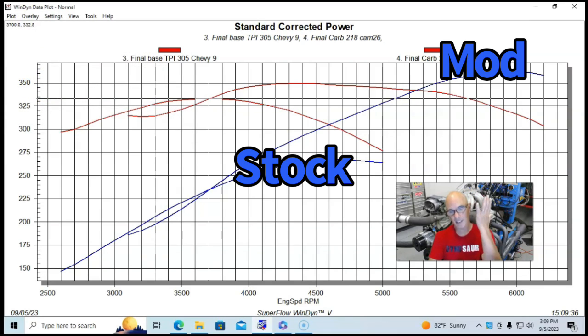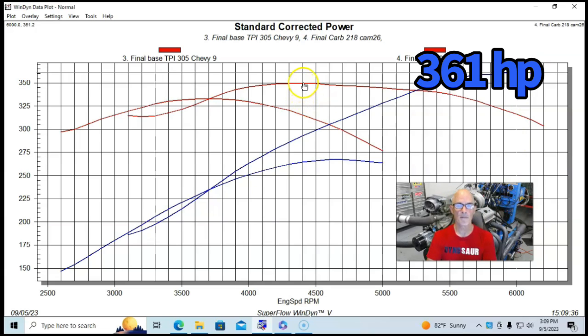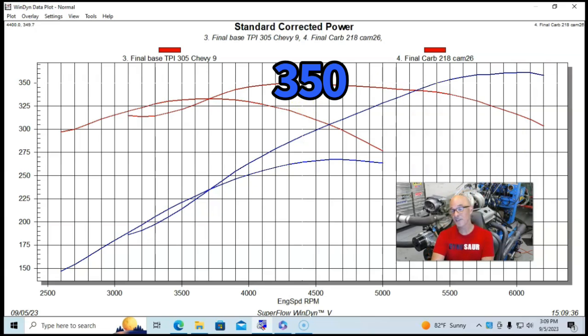You can see, we picked up a lot of power, so we'll talk about the peaks first of all, 361 horsepower after our modifications, and 350 foot-pounds, 349.7. And what we did was, we basically changed the top end of this motor, although we also changed the camshaft.